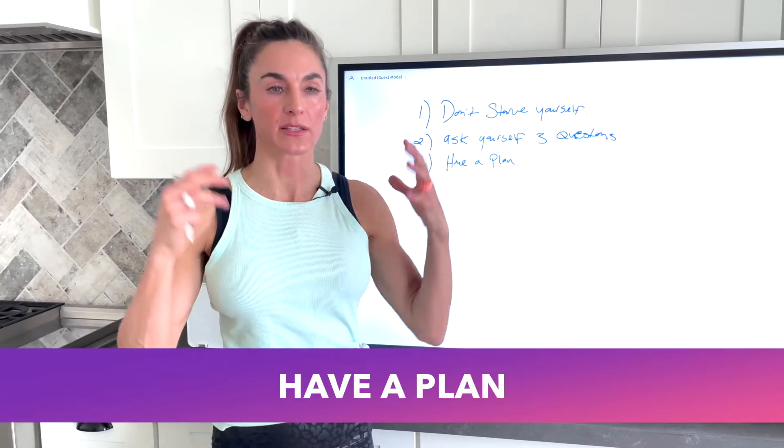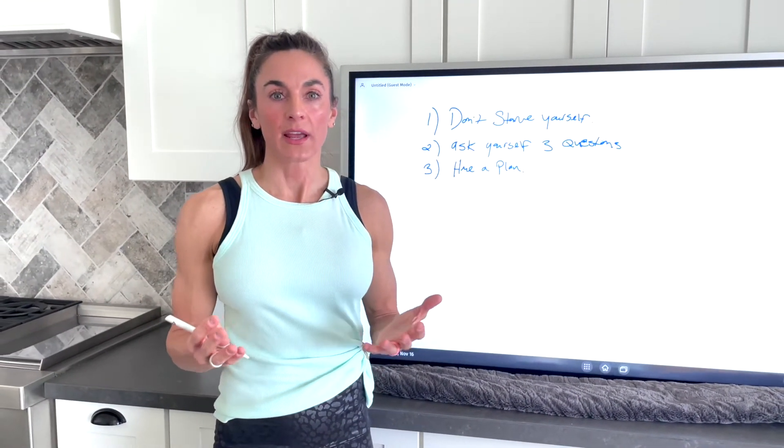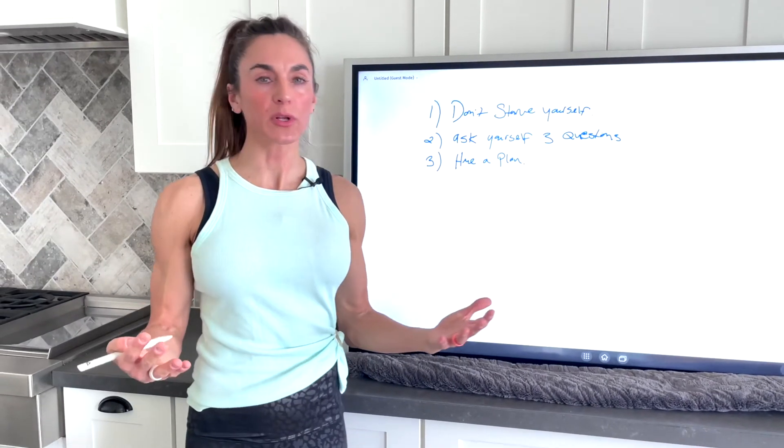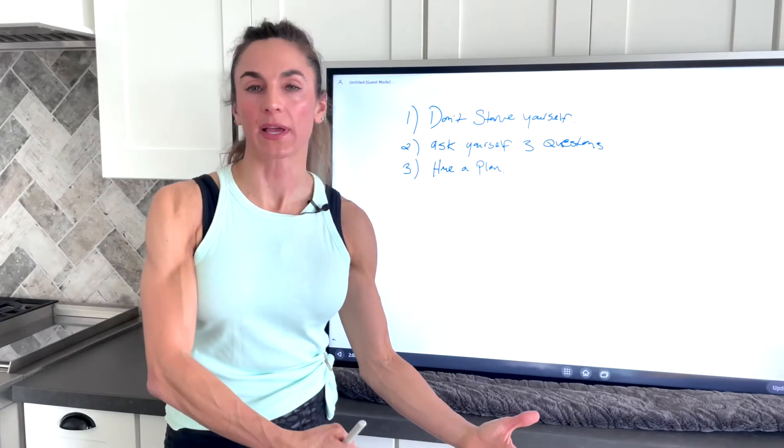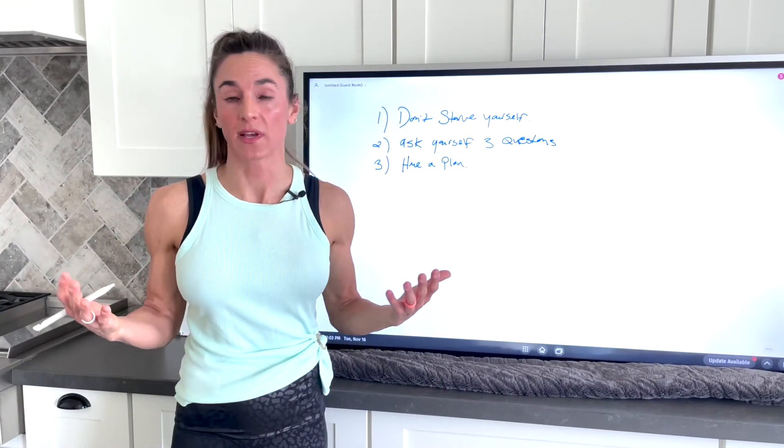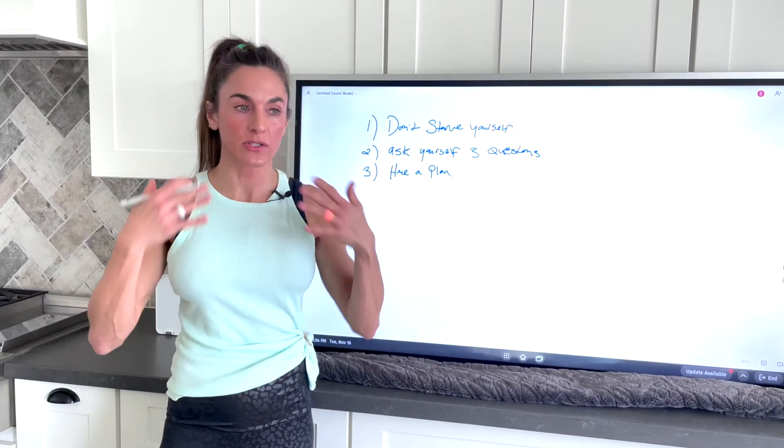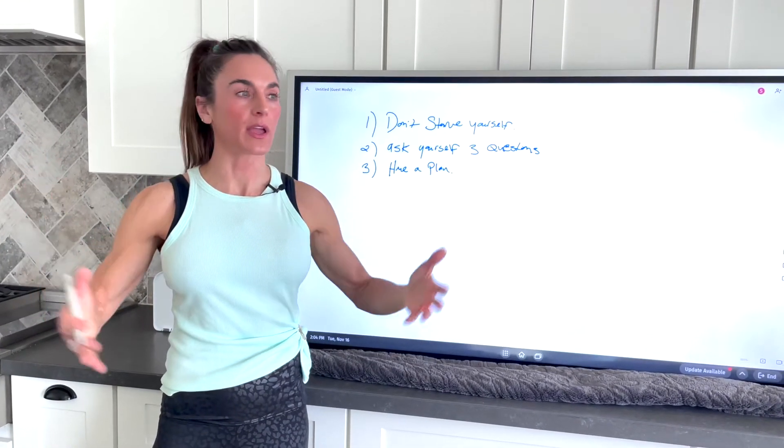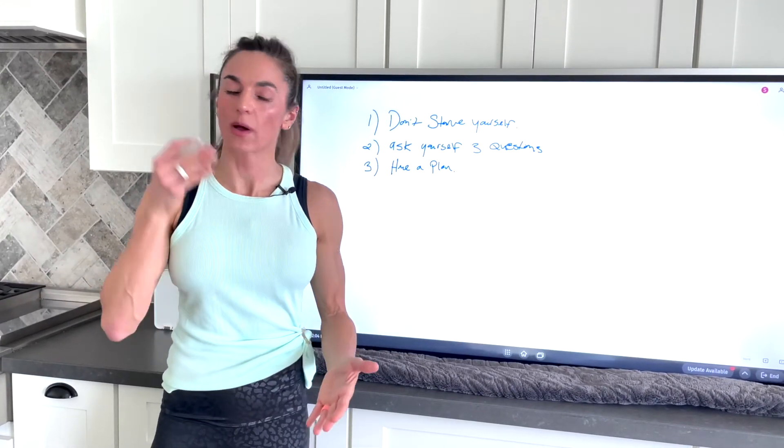And number three kind of goes along with that, is have a plan. Go in, have a plan. Seriously, visualize what you want to eat. And here's the thing, we typically, we're creatures of habit. Maybe we go to the same place, maybe we go to our grandparents' house or our parents' house, or maybe you host Thanksgiving every year. In that case, you know exactly what you're making. So in your mind, think about, okay, this is non-negotiable for me. These are my non-negotiables. This is what I want to have. I look forward to it every Thanksgiving.